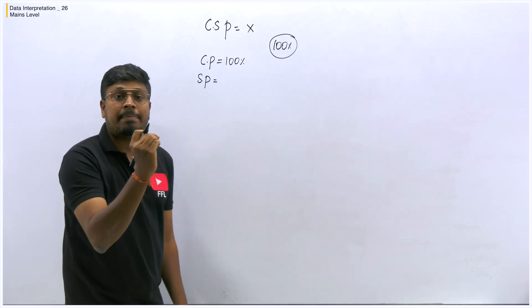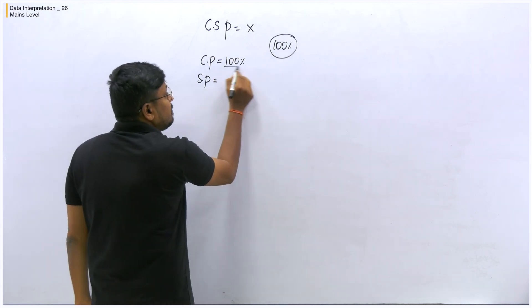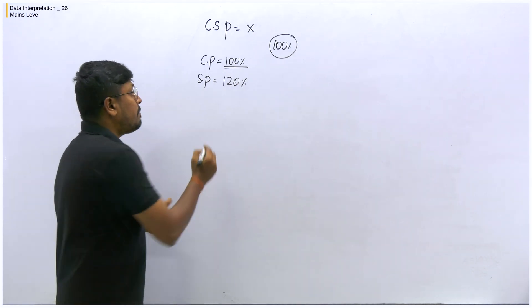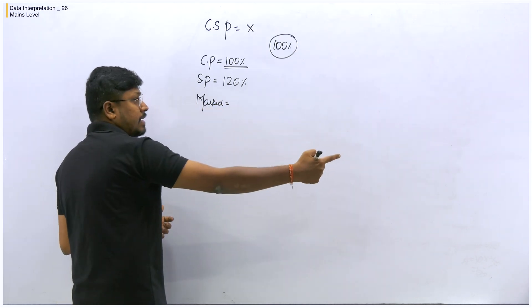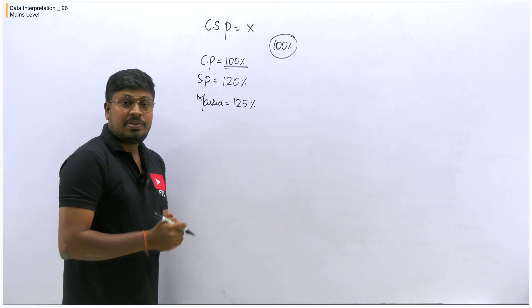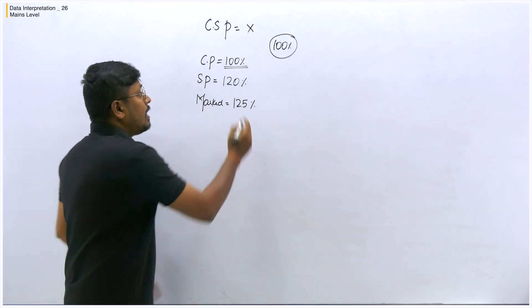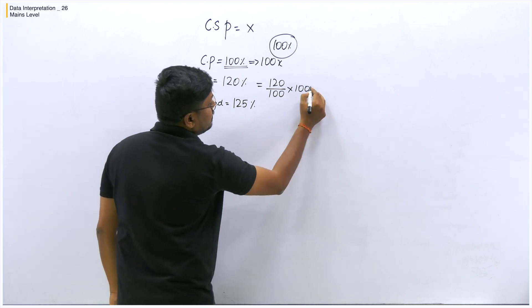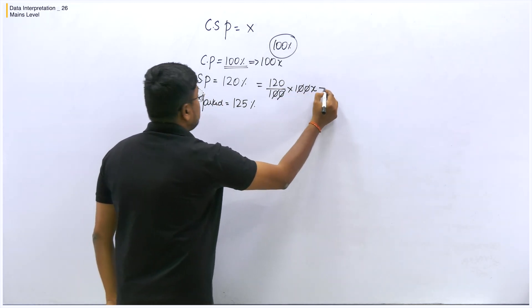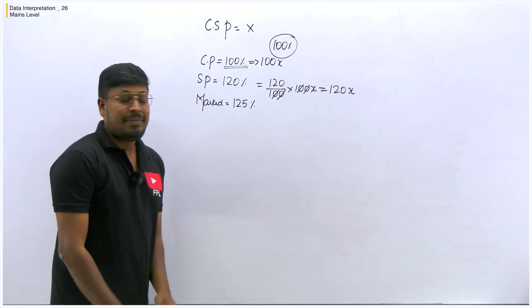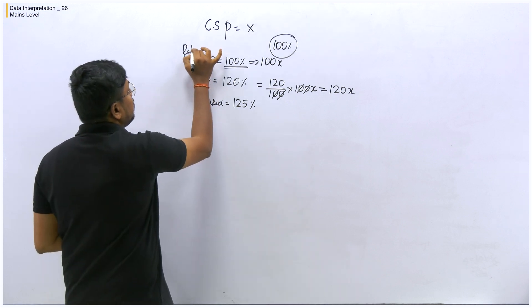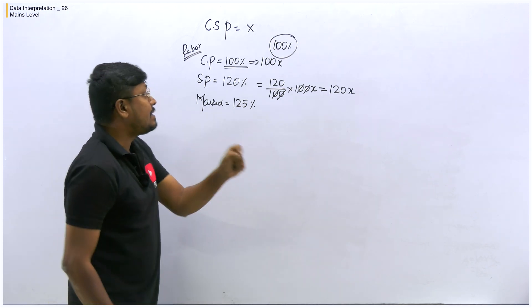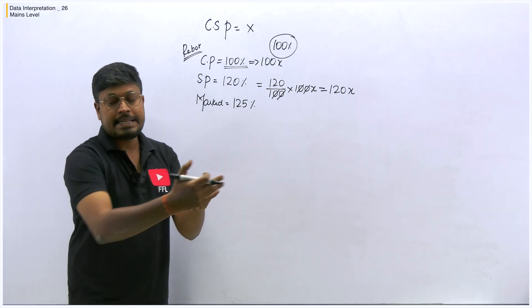Once you consider the cost price as 100%, you can find the selling price easily. For Reebok, the profit percentage is 20% according to the bar chart. So if we fix the cost price as 100%, then the selling price will be 120%. For the marked price, 25% markup means the marked price will be 125%.